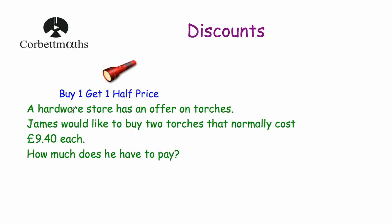Our next question says a hardware store has an offer on torches: buy one, get one half price. James would like to buy two torches that normally cost £9.40 each. How much will he have to pay? His first torch will cost £9.40, but the second torch will be half that price. So we need to halve £9.40 to see how much the half-price one will be.